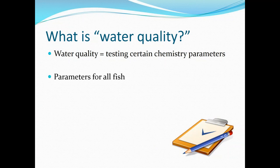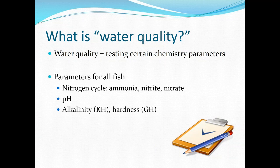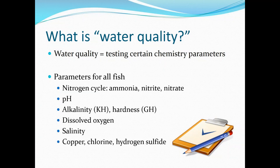The parameters we are concerned with in fish include your nitrogen cycle, which is ammonia, nitrite, and nitrate; pH; alkalinity, also known as KH; hardness, known as GH; dissolved oxygen; salinity; and copper, chlorine, and hydrogen sulfide.